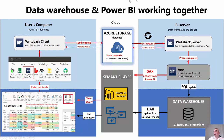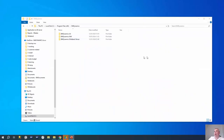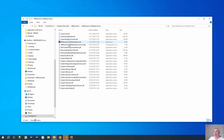Now let's look at what's going on on the BI server side — what settings are necessary to run Bio4Dynamics writeback. The client side is simple: you need the Bio4Dynamics writeback client application. On the server side, you need to install the Bio4Dynamics writeback server console application — this is step number one.